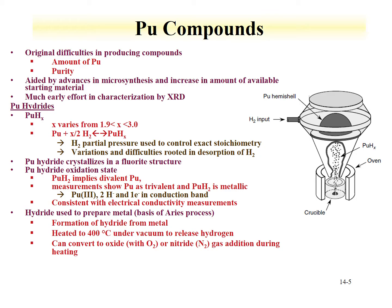Now that we've discussed plutonium metal, we can begin evaluating plutonium compounds. There was originally a difficulty in producing plutonium compounds, mainly because it was hard to obtain plutonium, and when obtained, the purity was not certified. Development of plutonium compound chemistry has been aided by microsynthesis and increased material availability. Much early effort involved characterizing compounds by x-ray diffraction.